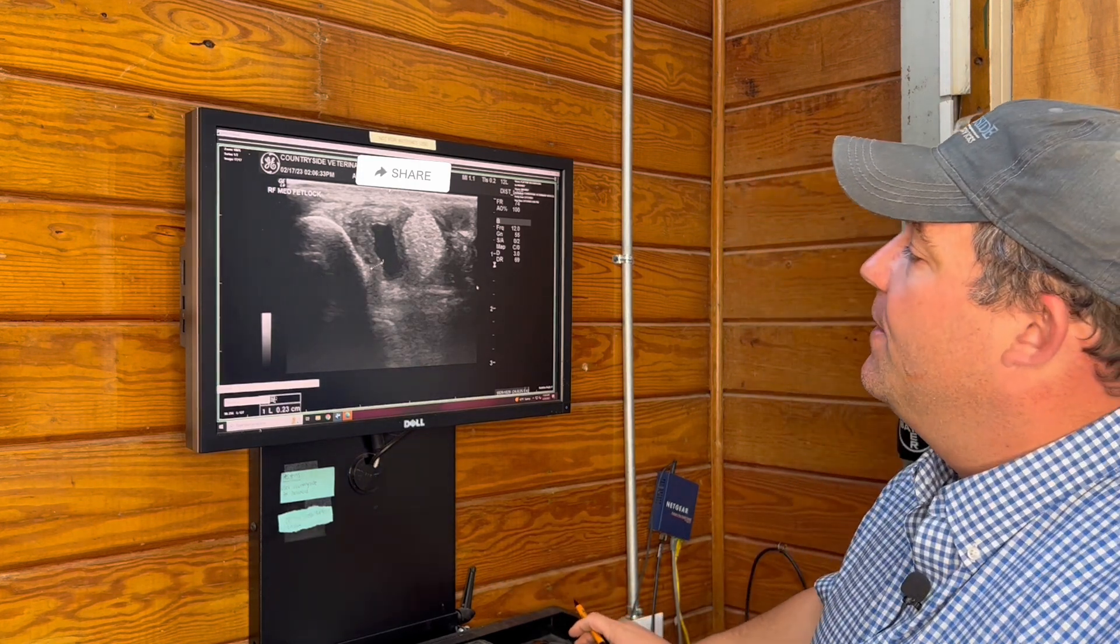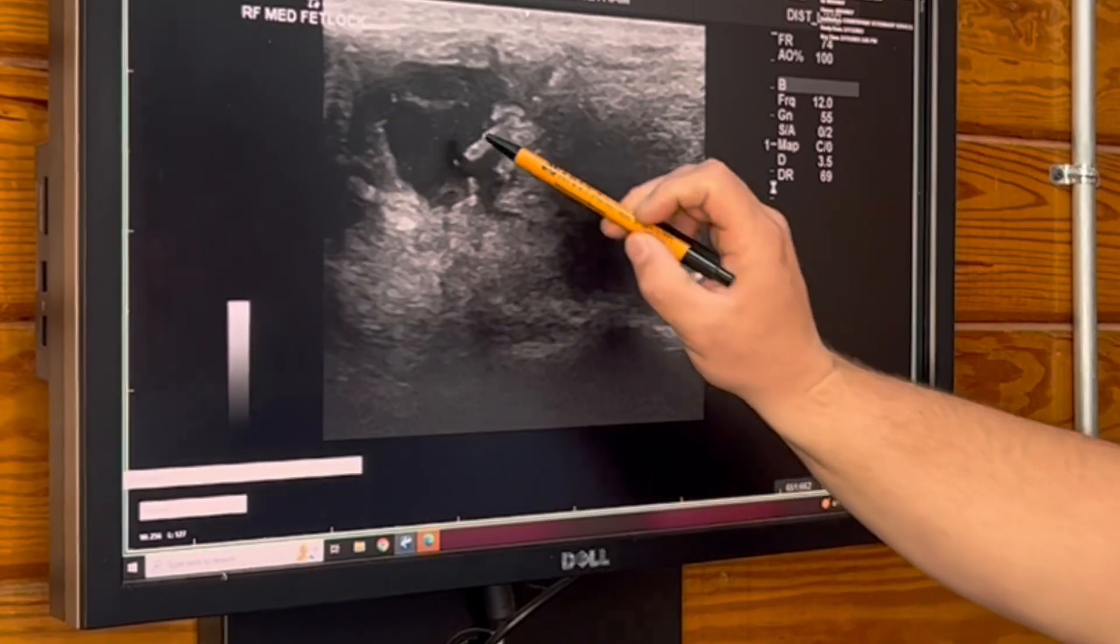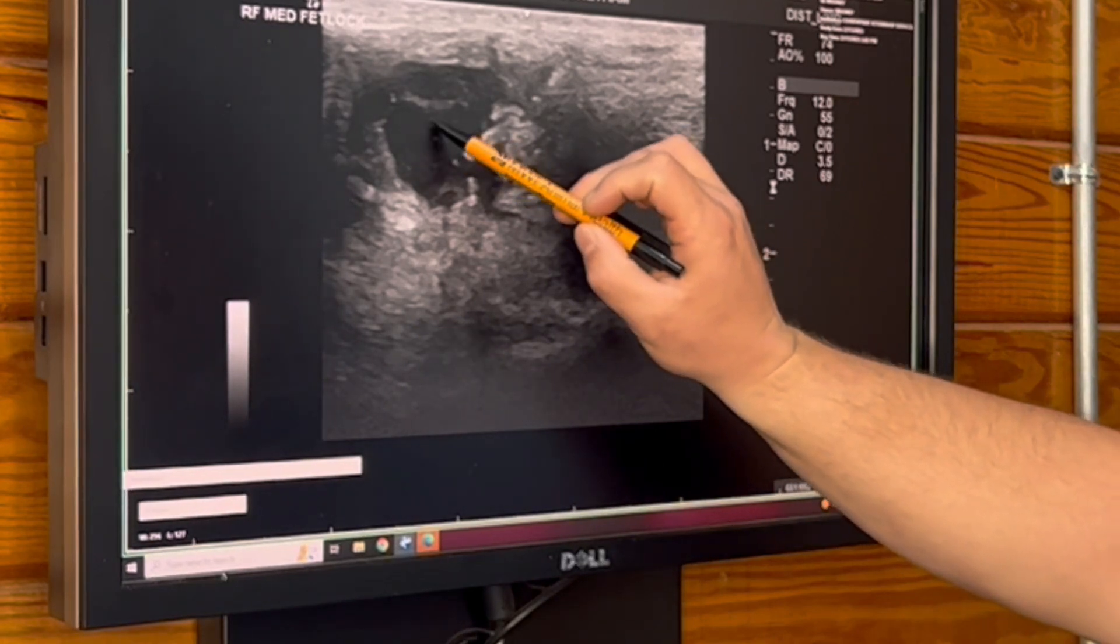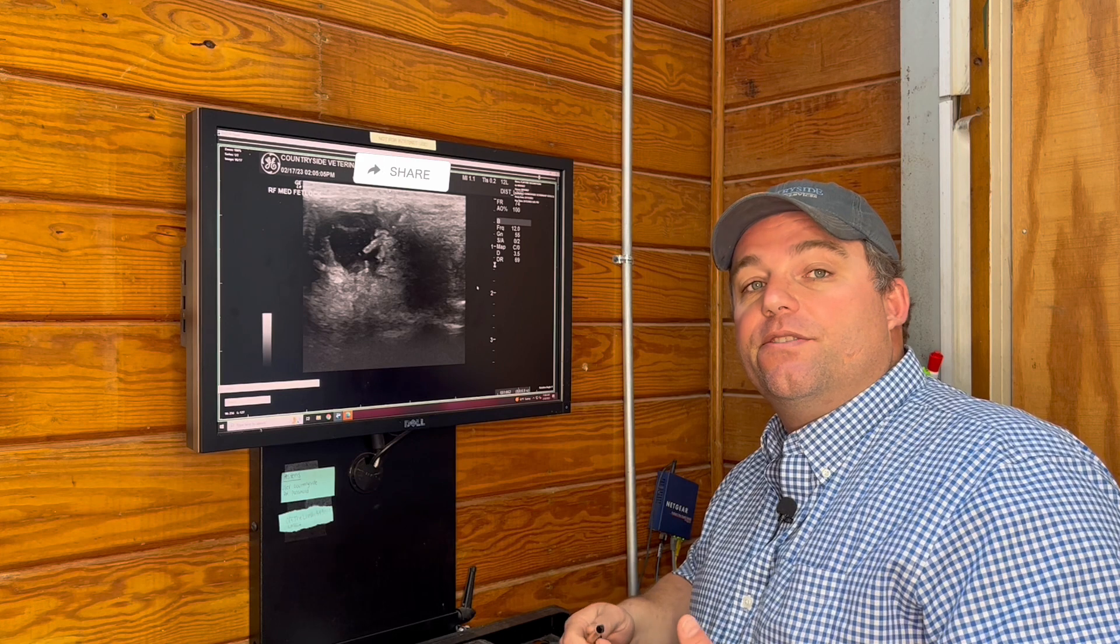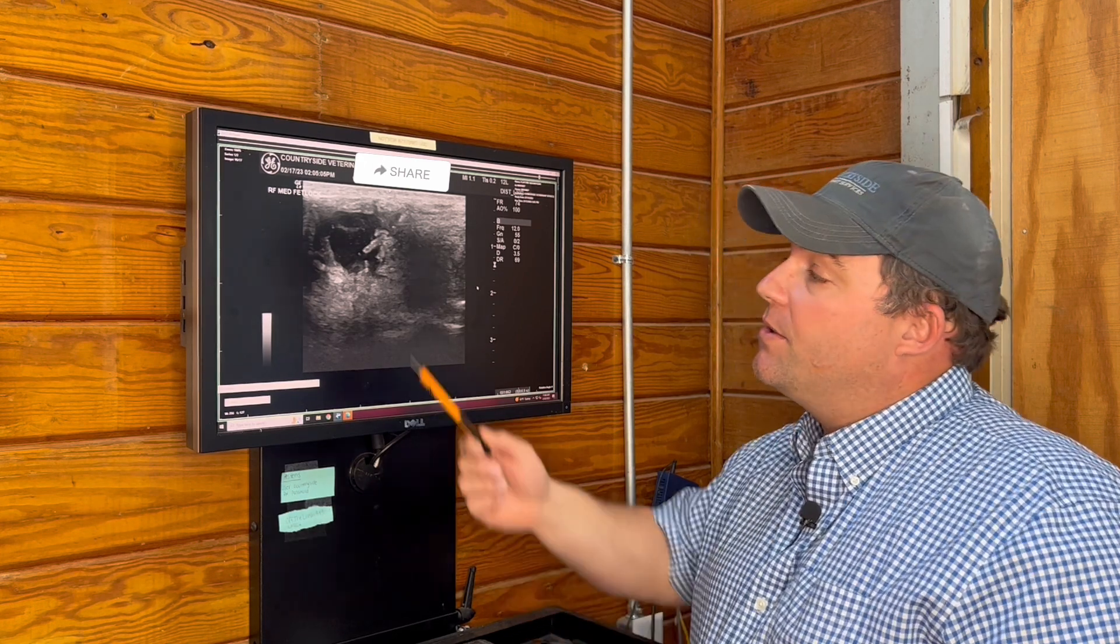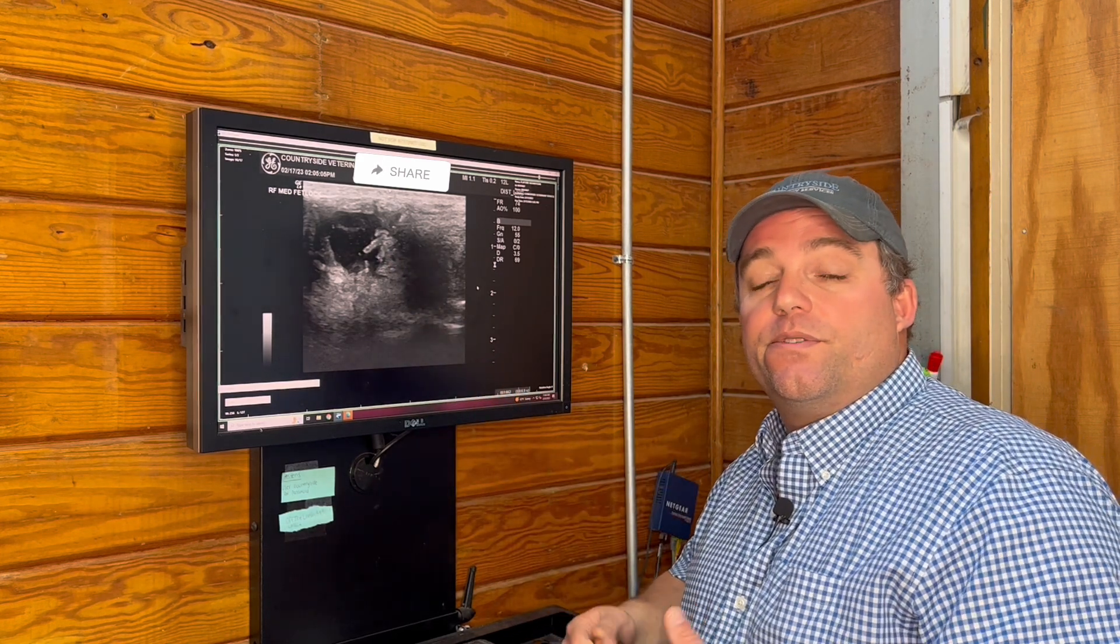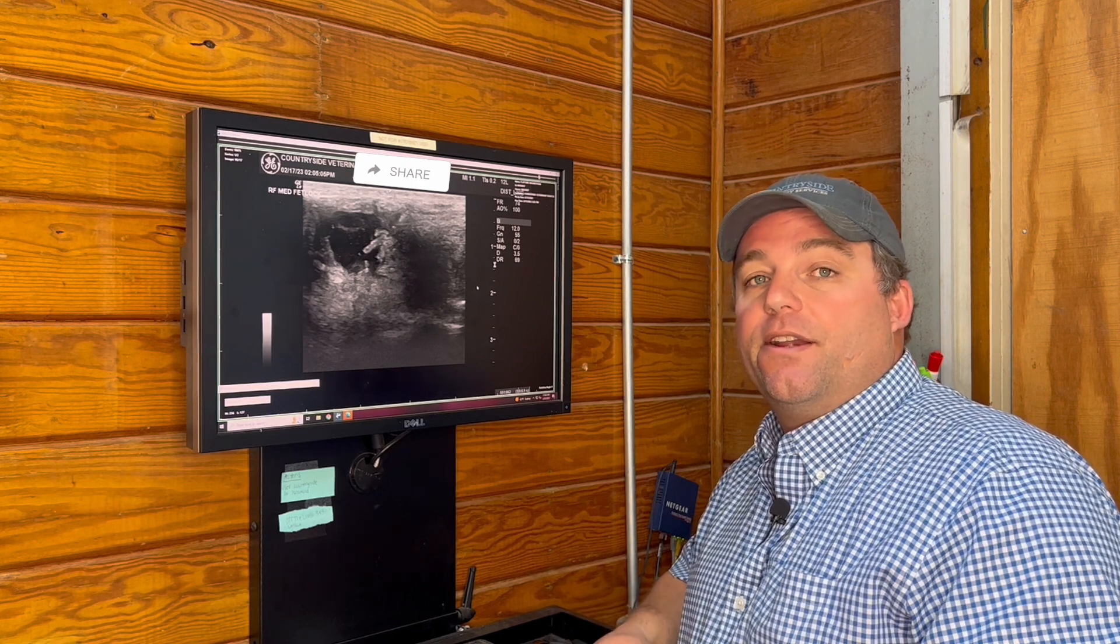Additionally, these white flecks you're seeing inside here are actually fibrin accumulation in the joint. With severe arthritis, we'll start to see fibrin deposition from the joint trying to stabilize itself and take care of itself.